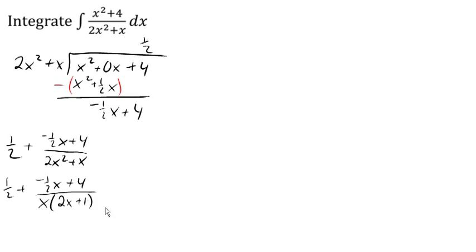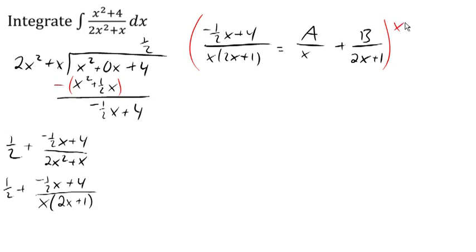We're going to break apart negative 1 half x plus 4 over x times 2x plus 1 as some constant over x plus some constant over 2x plus 1. We're going to start out by clearing out our fractions, so we're going to multiply both sides times the common denominator. When we do that, when we multiply this times the left side, the entire denominator cancels.